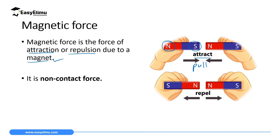Repulsion takes place when two like poles are close to each other — for example north pole close to north pole. Since the poles are similar they will repel, meaning they push each other away. This completes our definition of force: force is a pull or a push when two bodies interact.